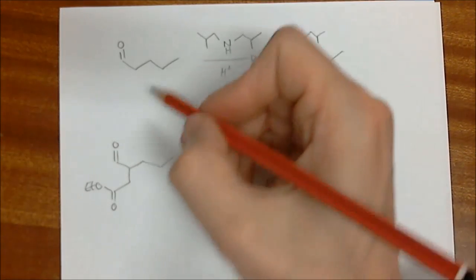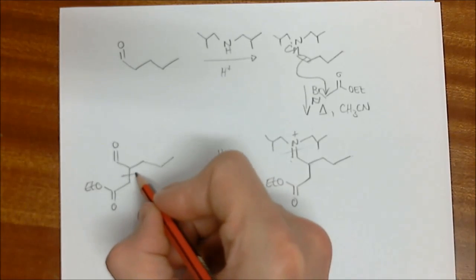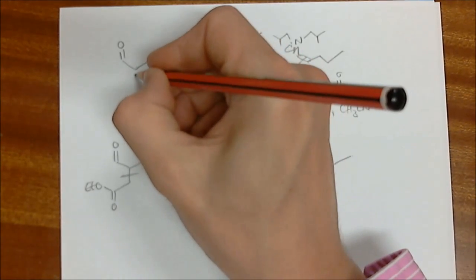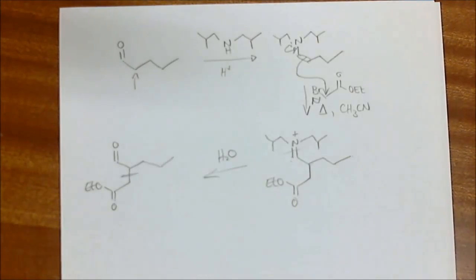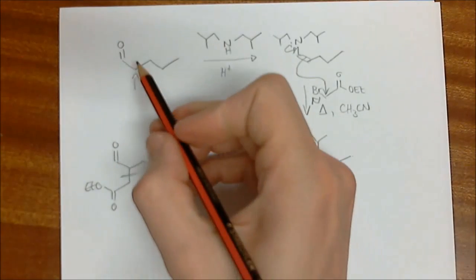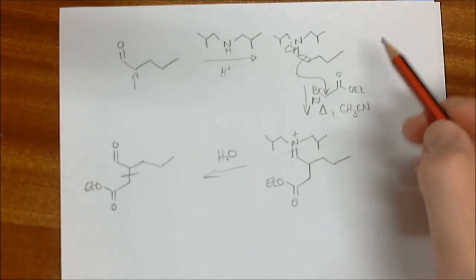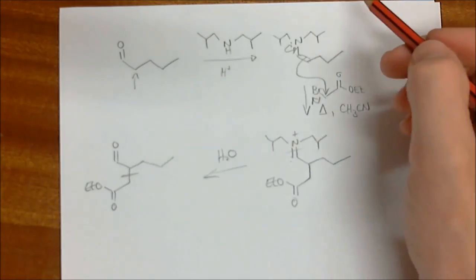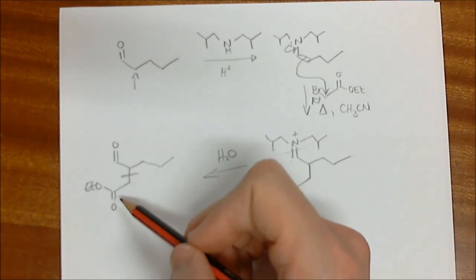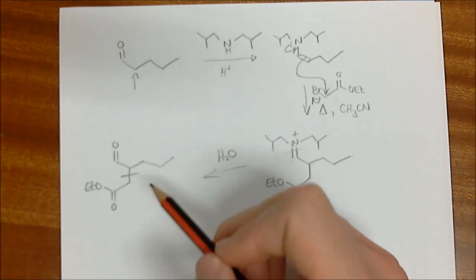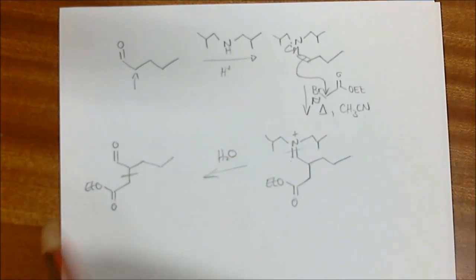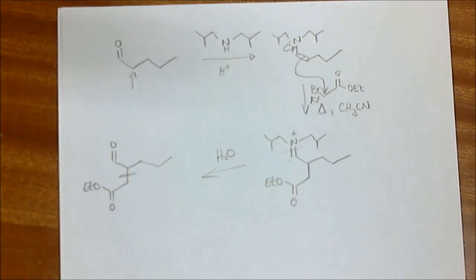Overall, what have we done? This bond here - we've basically added to that position over there. But we couldn't do it directly. We couldn't form the enolate and react with that because the aldehyde was going to self-condense. So we needed to form the enamine, and that is an important way of doing that.